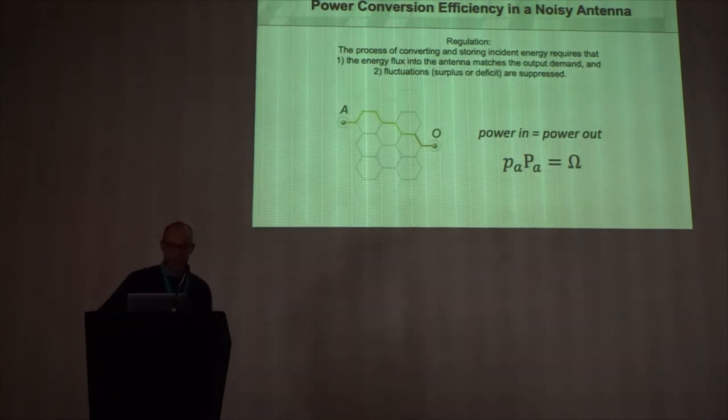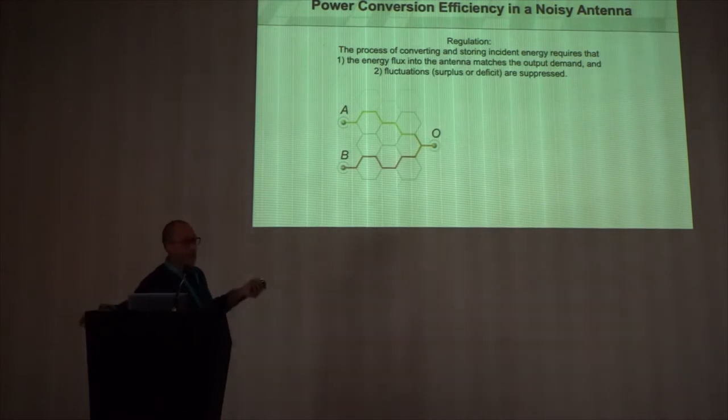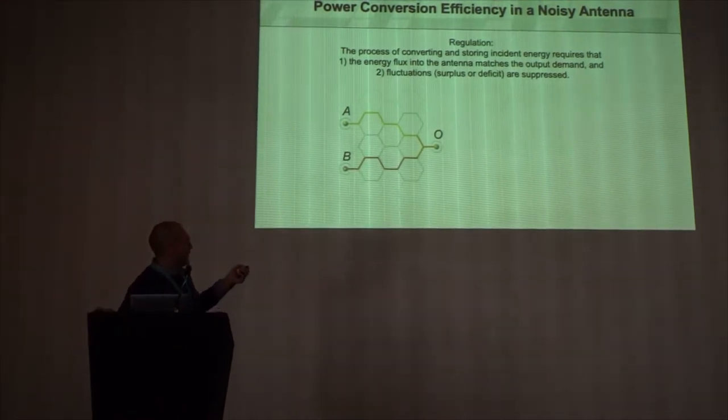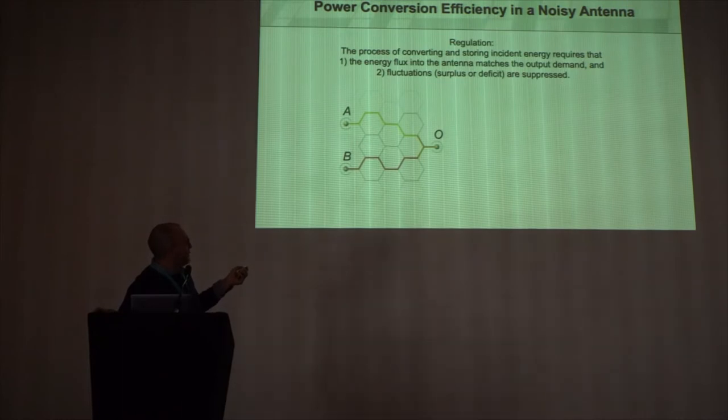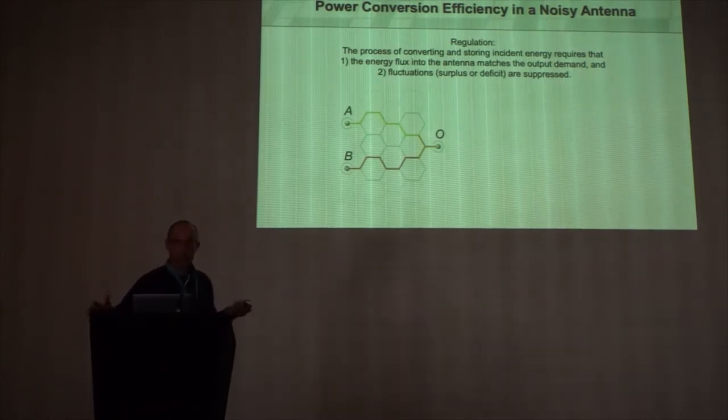So this is my second most complicated equation. Because what we considered was what happens if, and this is, I think, the next natural logical progression, is what if we had two pigments, A and B, that coupled to this output? How does it change the model?